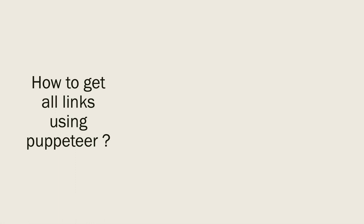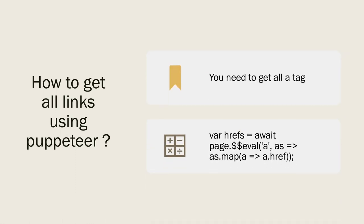How to get all links using Puppeteer — this is a tricky question also commonly asked in Selenium interviews. The trick is you need to find all elements with the 'a' tag, since all links have an a.href attribute. You can use: const hrefs = await page.$$eval('a', elements => elements.map(a => a.href)); — this returns an array of all links on the page.